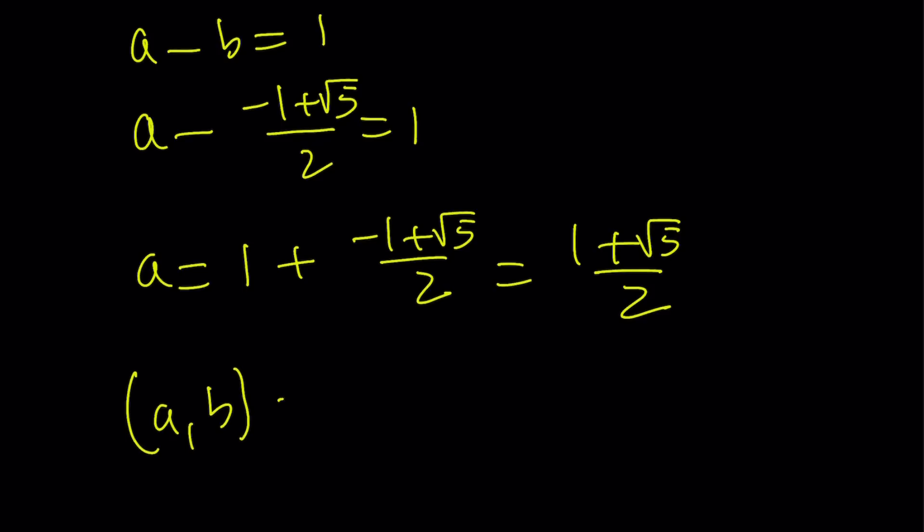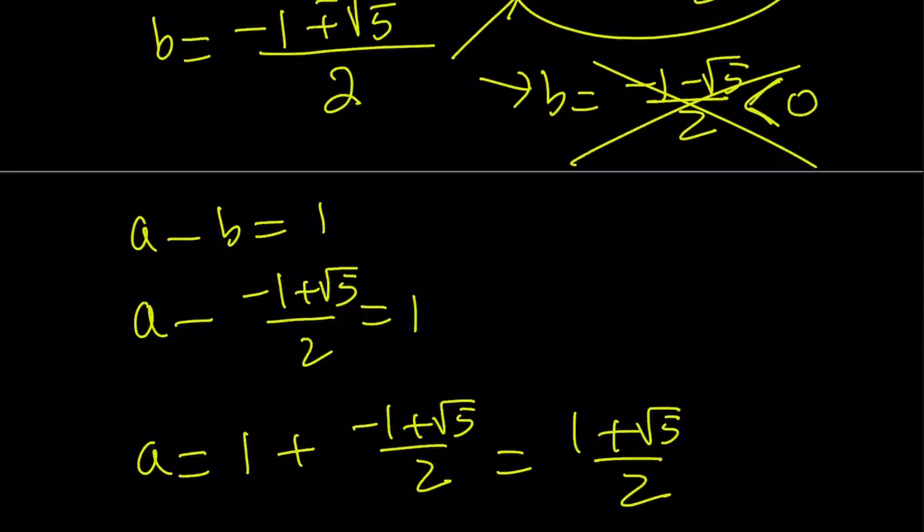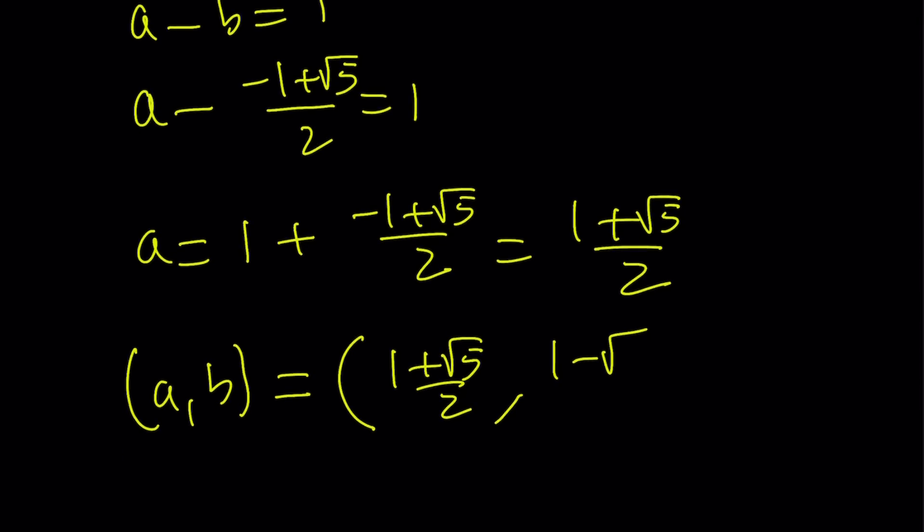So our a, b values are the following. We got for a, 1 plus root 5 over 2. And for b, we got 1 minus, not 1 minus. So I should probably write it. Maybe write it as root 5 plus 1 over 2. And the other one as root 5 minus 1 over 2. So they're kind of conjugates in this sense. And notice that when I subtract a minus b, I'm getting 1 because the square root of 5 cancels out. And when I multiply them, I'm getting 5 minus 1 divided by 4, which is equal to 1. So it's kind of like two numbers whose difference is 1 and whose product is 1.